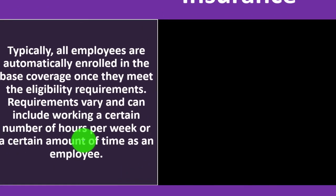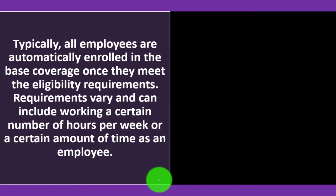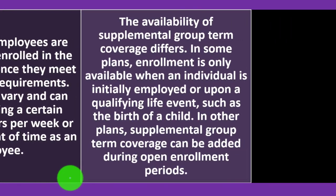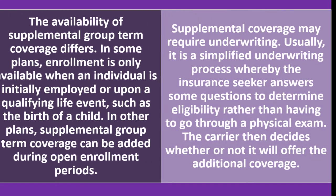Requirements for group term life insurance: Typically, all employees are automatically enrolled in base coverage once they meet eligibility requirements, which can include working a certain number of hours per week or a certain amount of time as an employee. The availability of supplemental group term coverage differs. In some plans, enrollment is only available when initially employed or upon a qualifying life event such as the birth of a child; in others, supplemental coverage can be added during open enrollment. Supplemental coverage may require underwriting, usually a simplified process where the insurance seeker answers questions to determine eligibility rather than undergoing a physical exam.